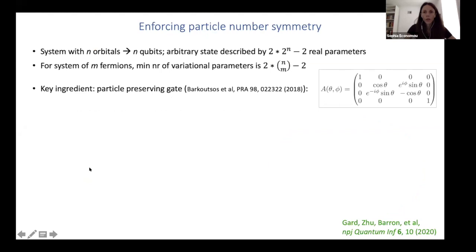So the first type of symmetry you can impose is particle number symmetry. So typically in the problems we're interested in, the number of fermions is fixed, the number of electrons is fixed, which means that out of my N orbitals, which means N qubits, I only want to have M excitations. So I go from two to the N plus one minus two real parameters to two N choose M minus two real parameters.